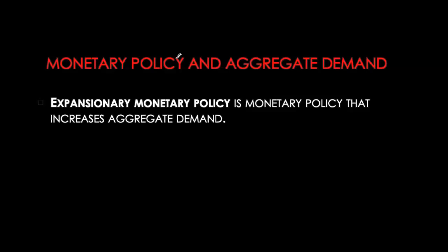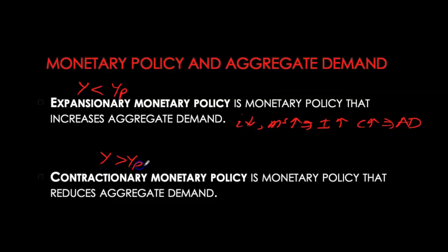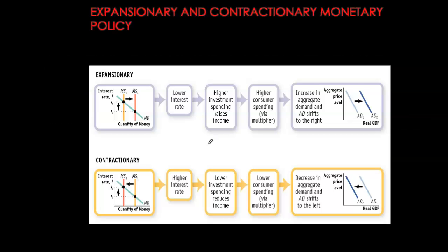Let's revisit monetary policy and its effect on the aggregate demand curve. If we have a recessionary output gap, we will typically use expansionary monetary policy to close the output gap and stimulate aggregate demand. When output is higher than potential level, we can use contractionary monetary policy to dampen aggregate demand. Expansionary monetary policy stimulates investment and consumption, shifting AD to the right, while contractionary monetary policy raises interest rates, dampening investment and consumption, shifting AD to the left.